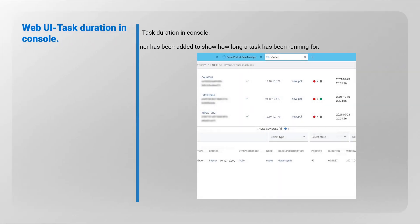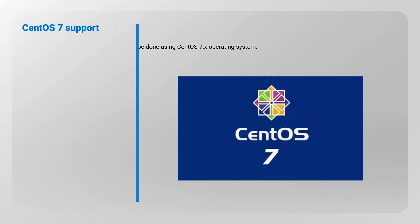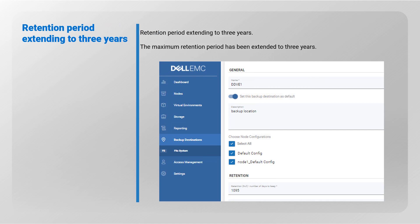Web UI task duration in console: a live timer has been added to show how long a task has been running. CentOS 7 support: installation can now also be done using the CentOS 7 operating system. Retention period extended to three years: the maximum retention period has been extended to three years.